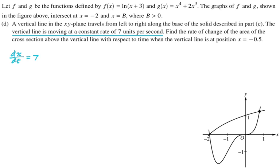We want to find the rate of change of the area of the cross section above the vertical line. So remember what we're doing here is we have this. This is in the xy plane. And on that segment, we build a square. So it comes out of the xy plane. It goes into space.